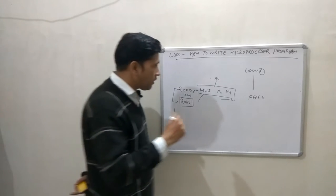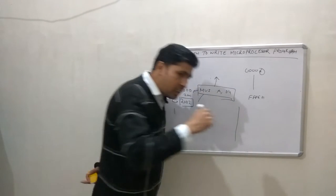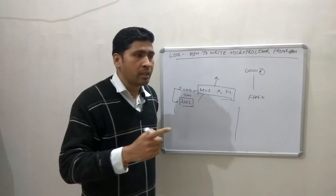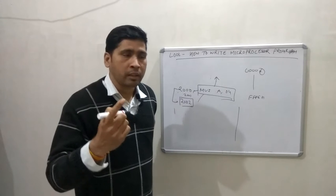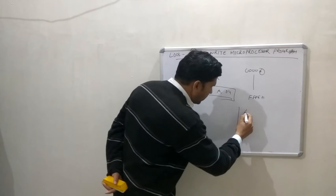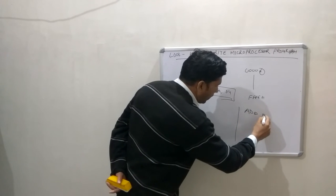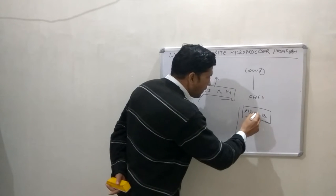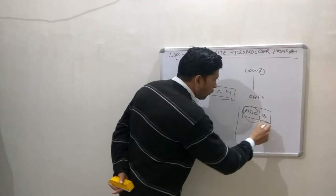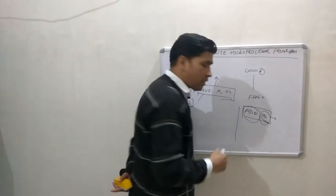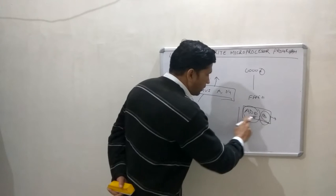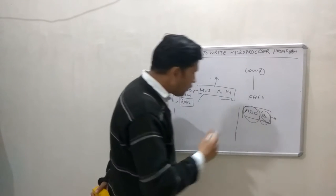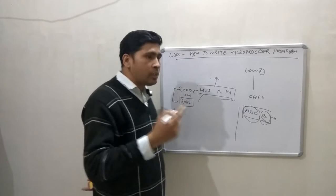Instructions are divided into three types: one-byte instruction, two-byte instruction, and three-byte instruction. A one-byte instruction acquires only one memory address. A two-byte instruction acquires two memory addresses. A three-byte instruction acquires three memory addresses. The simple method to identify which instruction takes how much memory: if an instruction only uses registers, it takes only one RAM address — that is called a one-byte instruction. For example, ADD B only works with the B register, so it is a one-byte instruction.